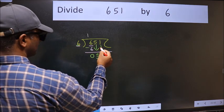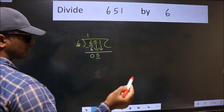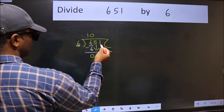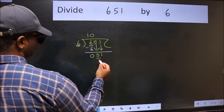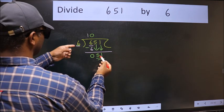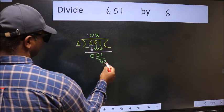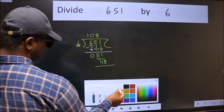The rule to bring down the second number is we should put 0 here, then only we can bring this number down. Now we have 51. A number close to 51 in the 6 table is 6 times 8 equals 48. Now we should subtract.